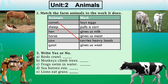Second is sheep. Sheep gives us wool — we can get wool to make woolen clothes. So draw a line from sheep to 'gives us wool' in the second column. Third is hen. You all like to eat eggs — we get eggs from a hen. So match hen with 'lays eggs' in the work column.